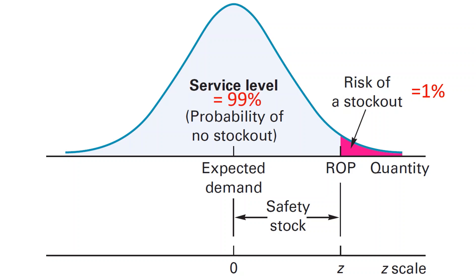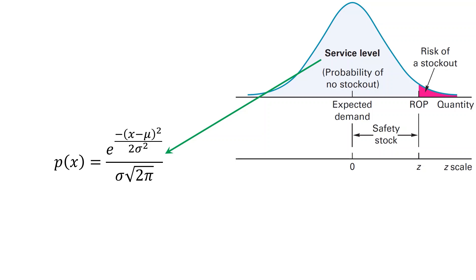The 0.99 is the area under the curve and we need to find the corresponding x value or z value. The area under the curve, or the service level, can be calculated by this equation, where P(x) is the service level — 0.99 in the current case — x or z is the value we need to obtain, mu is the mean value of the demand (d-bar), and sigma is the standard deviation of the demand.